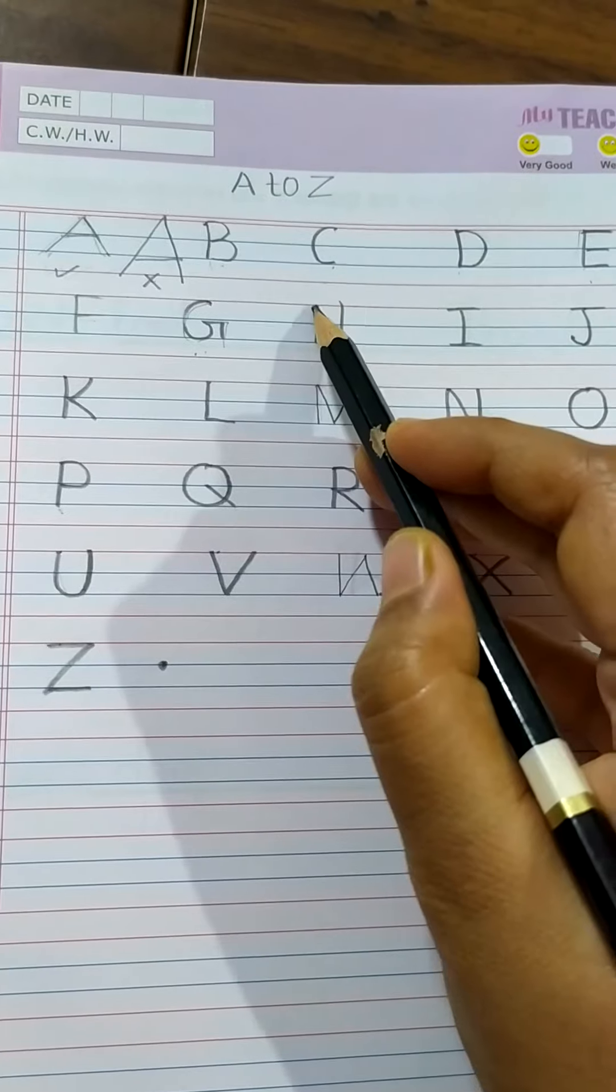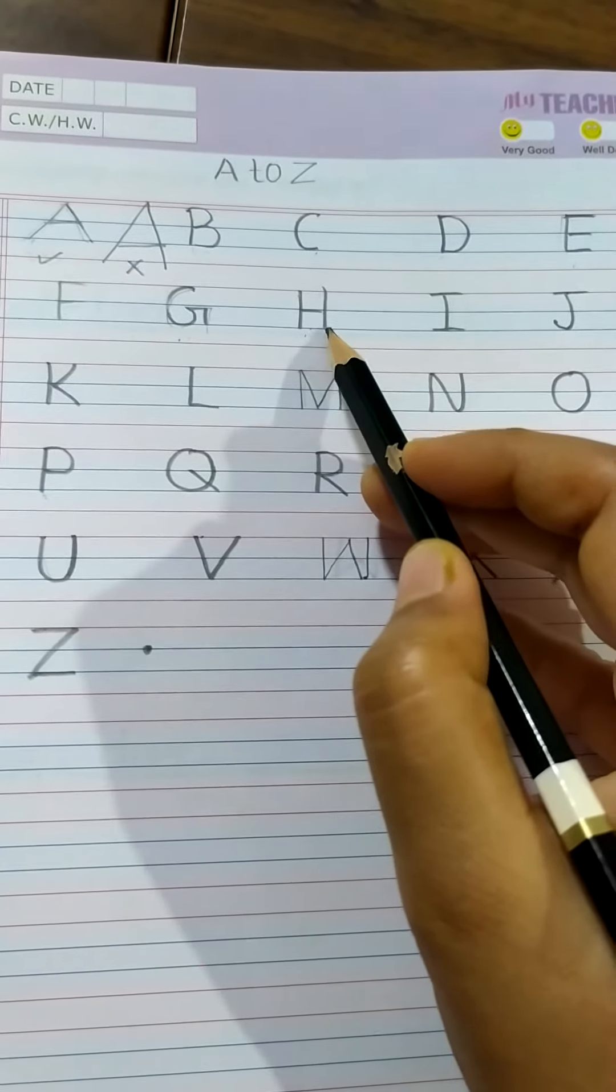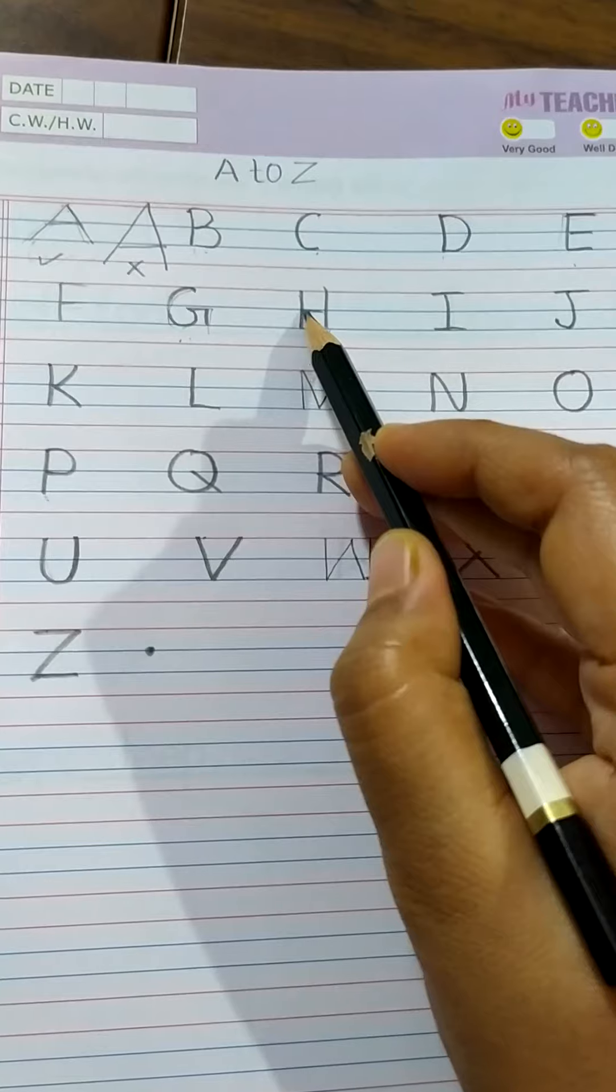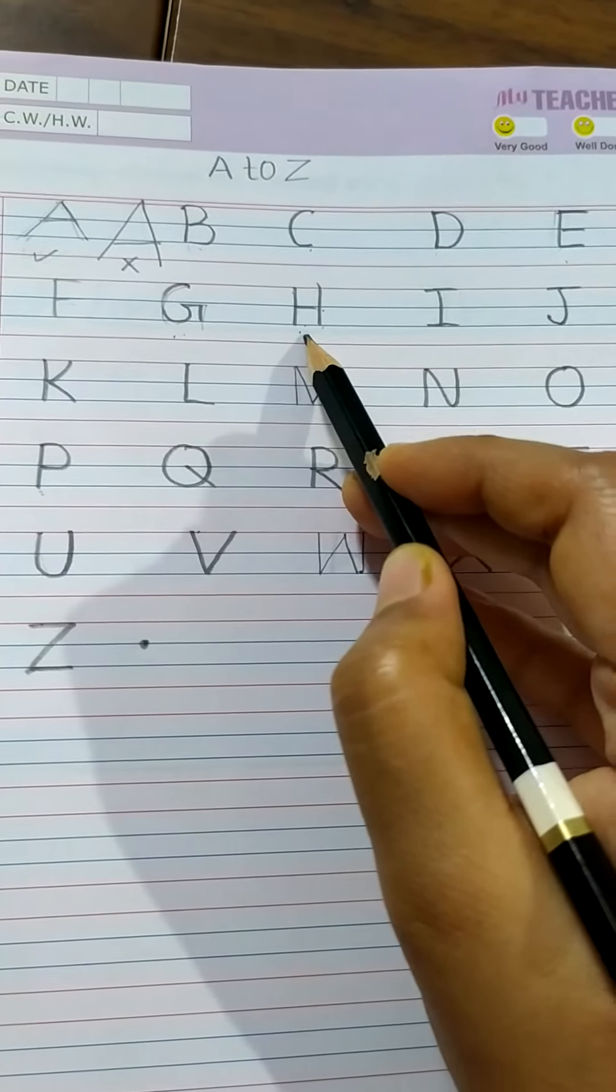Now, we will write letter H. Red to blue, one standing, again another standing. Put here in the between, one sleeping. This is letter H.